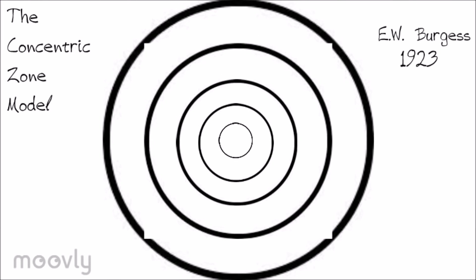The concentric zone model was made in 1923 by E.W. Burgess. It says that a city develops in a series of rings that can vary in size and expand away from the city. The inner ring, or ring one, is the CBD or central business district, which contains the commercial and business services and is often called the downtown section of a city. The next ring is called the zone of transition, which contains industry and poor quality housing.